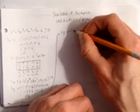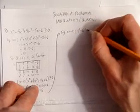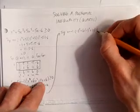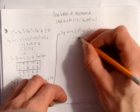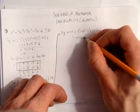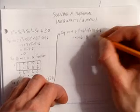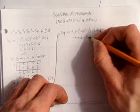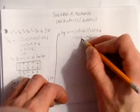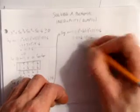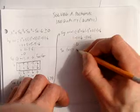Let's try something negative, since we need to get some negatives in there. Let's try x equals negative 1, substituting into the cubic: negative 1 cubed plus 6 times negative 1 squared plus 11 times negative 1 plus 6. That gives negative 1 plus 6 minus 11 plus 6, which equals 0. So x plus 1 is a factor.